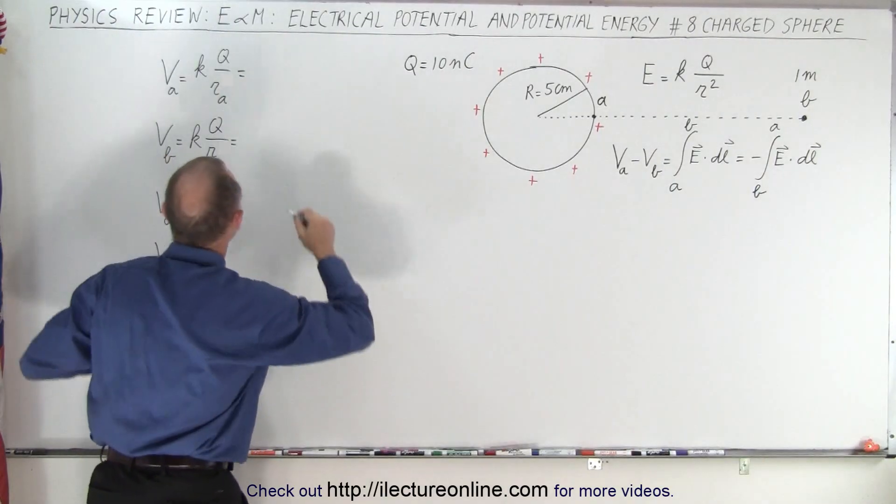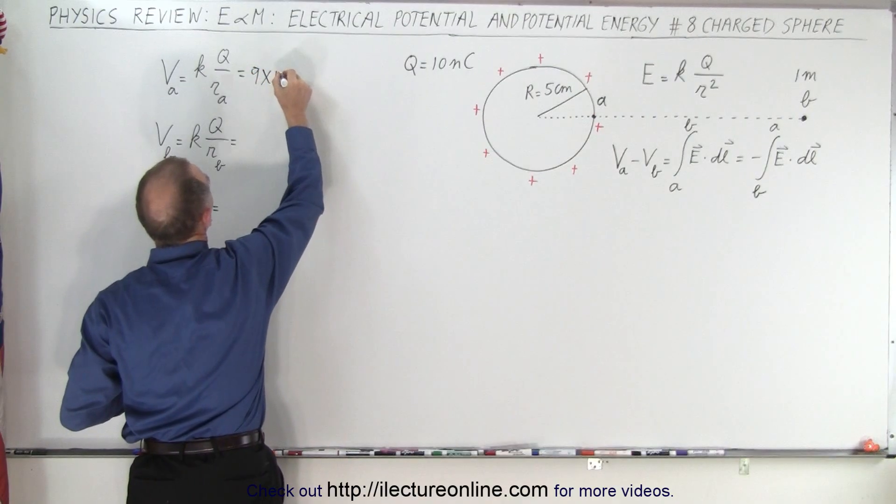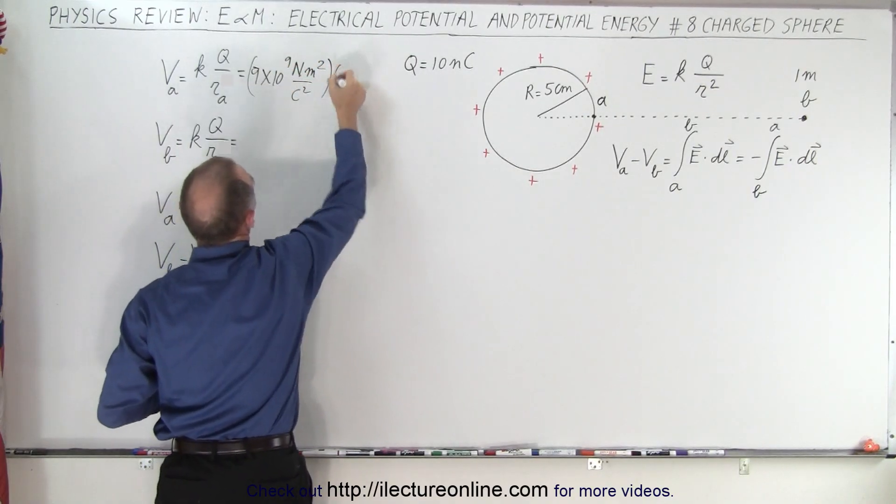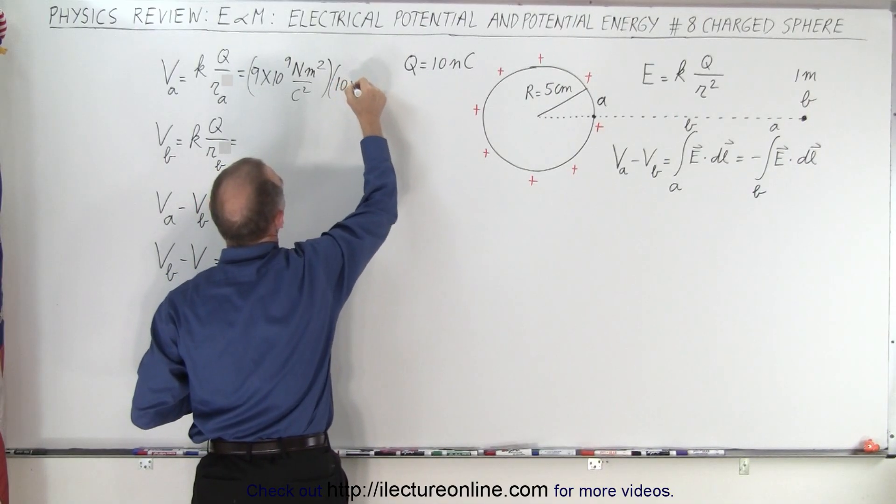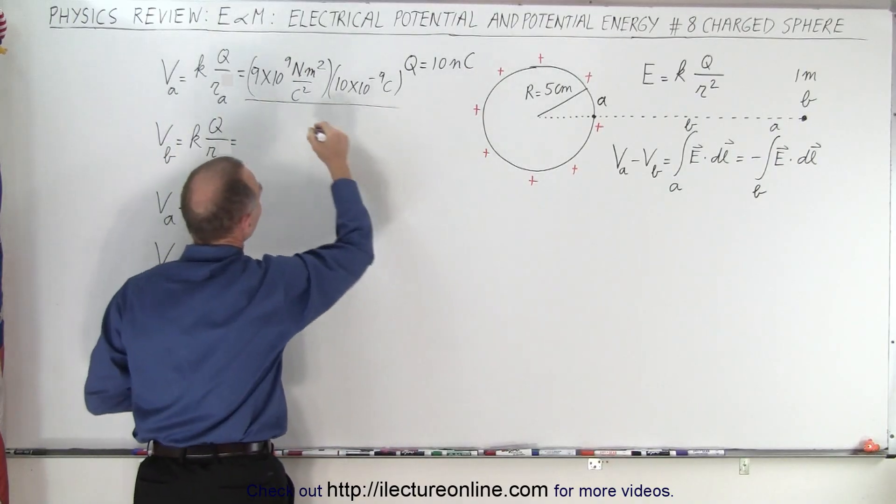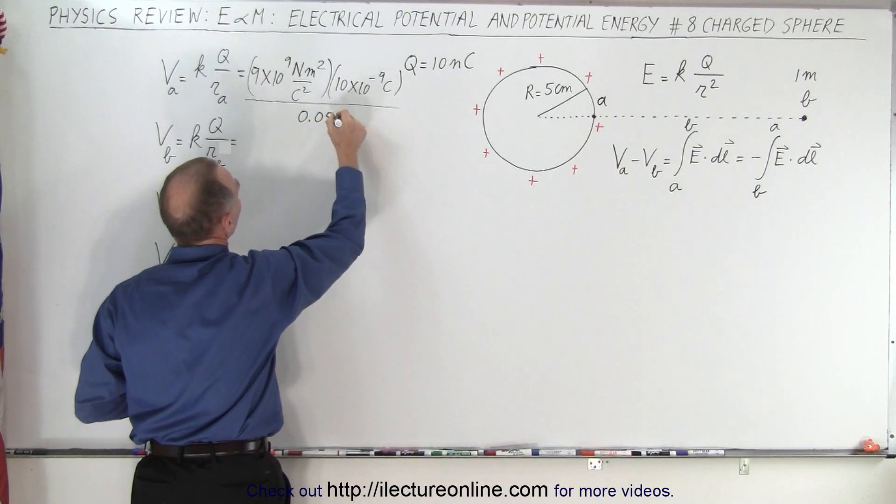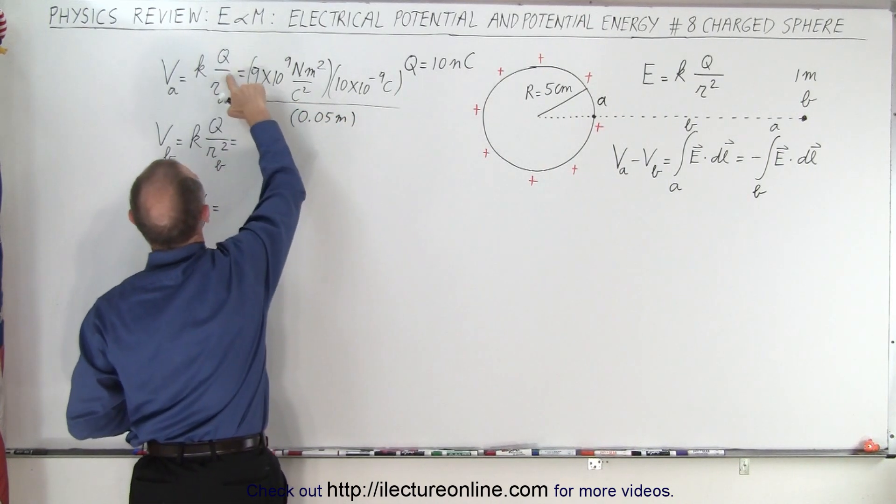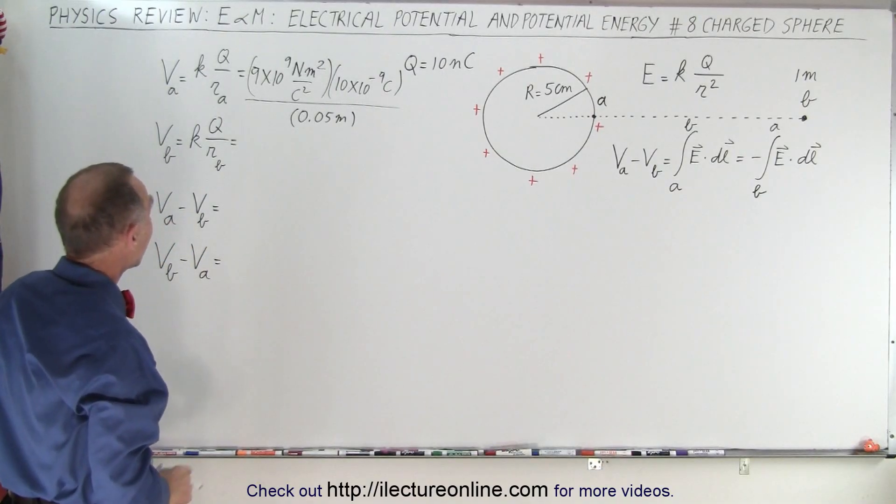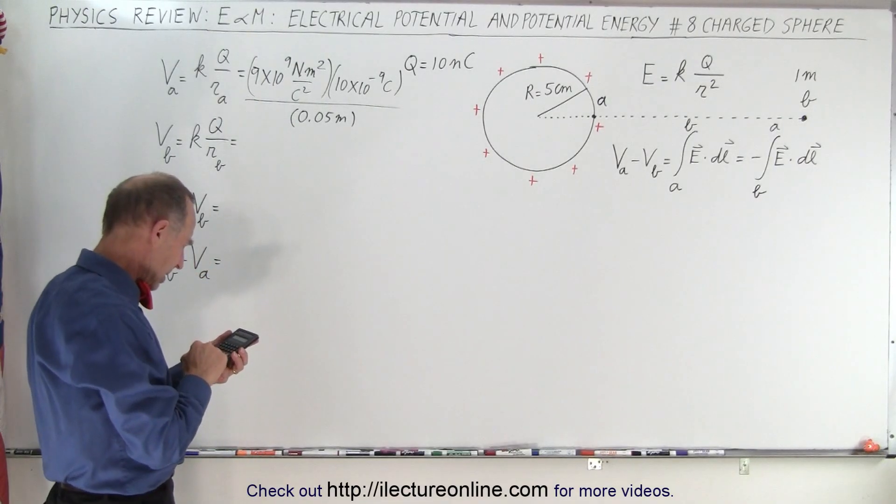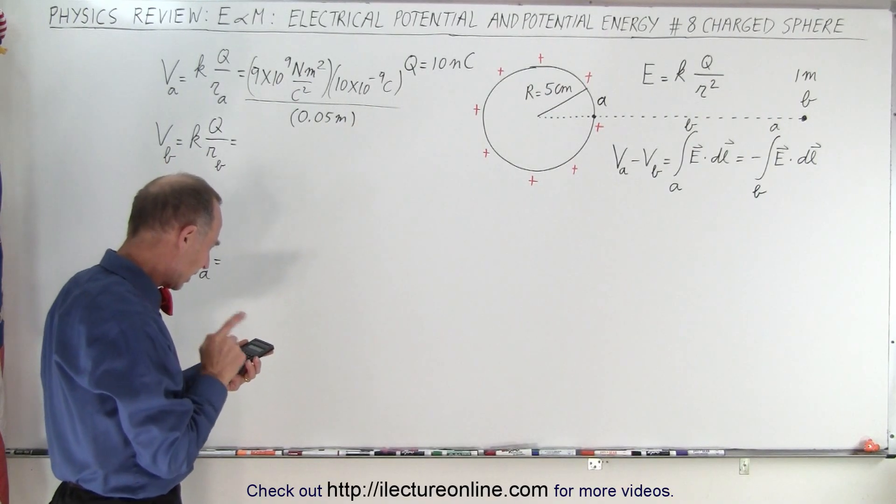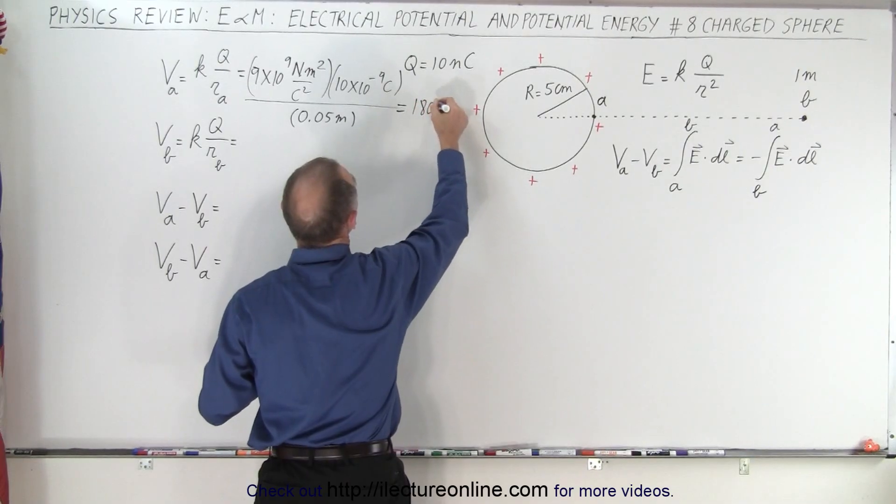Alright, starting over here, we have K, K is equal to 9 times 10 to the 9th newtons meters squared per coulomb squared, multiplied by 10 nanocoulombs, which is 10 times 10 to the minus 9 coulombs, all divided by the distance, and that would be 5 centimeters or 0.05 meters. So we have 9e9 times 10e-9 divided by 0.05, and so this is equal to 1800 volts.